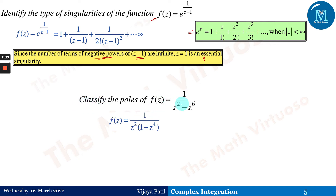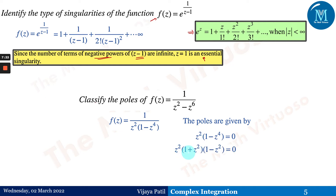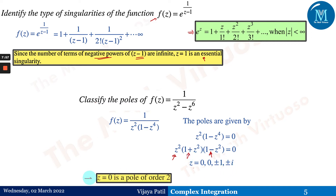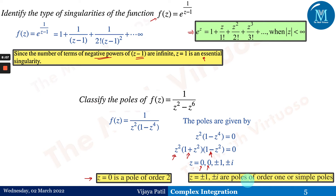Classify the poles of f(z) = z² / (z⁶ − z²) = z² / [z²(1 + z²)(1 − z²)]. Setting the denominator to zero: z² = 0 gives z = 0 (repeated twice); (1 − z²) = 0 gives z = ±1; (1 + z²) = 0 gives z = ±i. Therefore z = 0 is a pole of order 2, while z = ±1 and z = ±i are simple poles (poles of order 1).